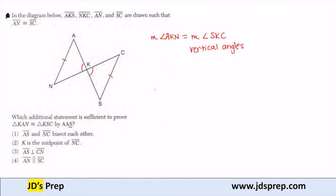So now I need another angle. I know that I'm not going to be using option 1 because that's going to give us another side. If I were to use the fact that AS and NC bisect each other, then I can use SSA to prove that the triangles are congruent, but I want to use AAS.